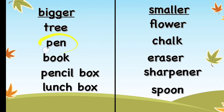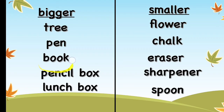A pen is bigger than a chalk, or we can say a chalk is smaller than a pen. If you look at your book and your eraser — keep your eraser on your book and look which one is bigger — you will see that the book is bigger than the eraser, and the eraser is smaller than a book.